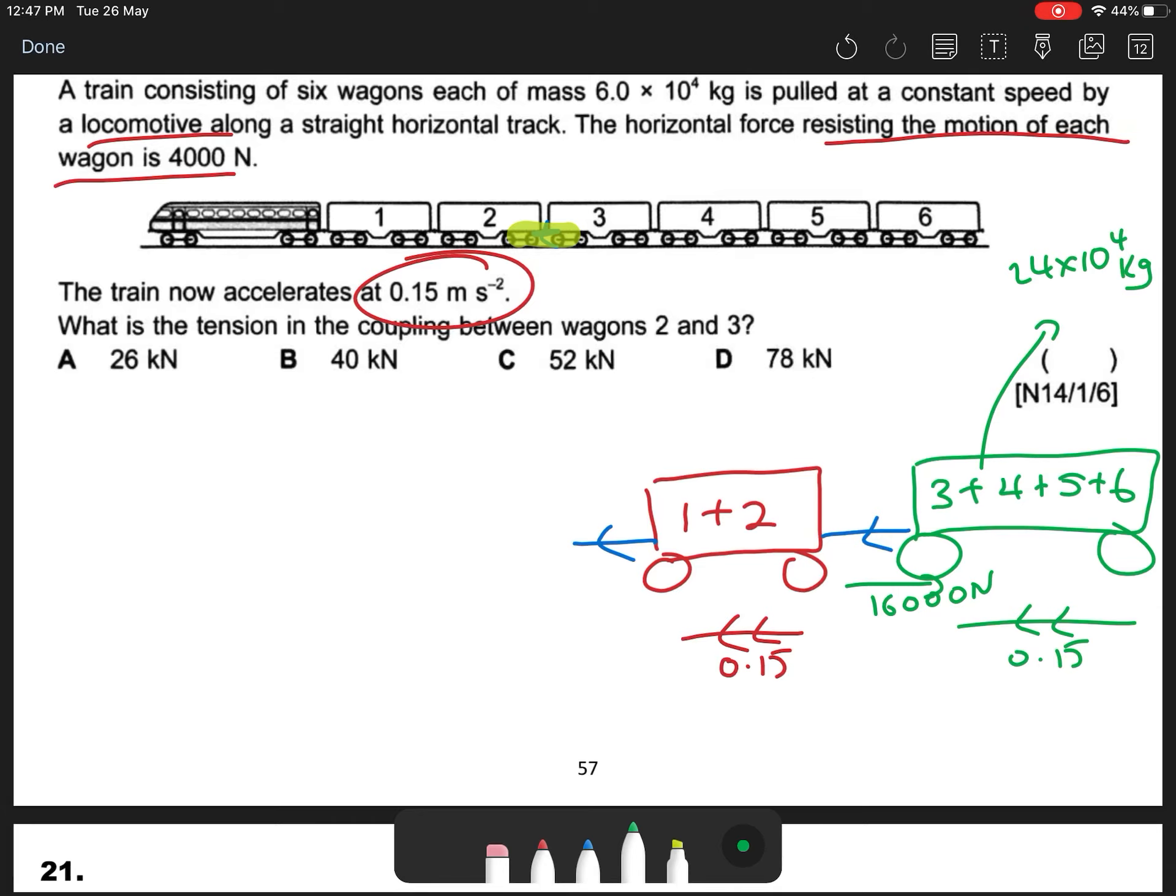So I have mass, I have acceleration. I can find my resultant force. F is my M is 24 × 10^4, A is 0.15.